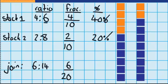And now I want to show that as a percentage. I know that six twentieths is the same as three tenths, so it must be thirty percent.